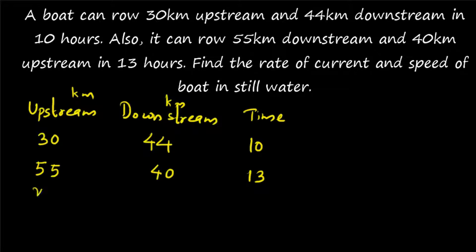You have to find X and Y, where X is the speed of the boat in still water and Y is the rate of current. The question may seem complex, so I'm going to give a shortcut formula for these kinds of questions. Be thorough with the format: upstream distance, downstream distance, and total time are given — 30 km upstream, 44 km downstream in 10 hours, and 40 km upstream, 55 km downstream in 13 hours.